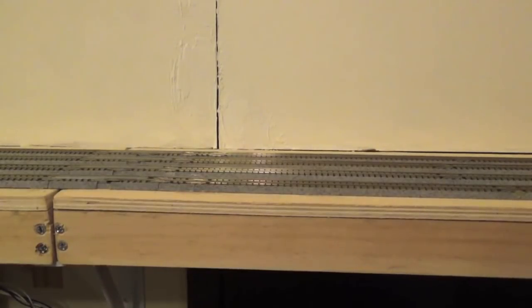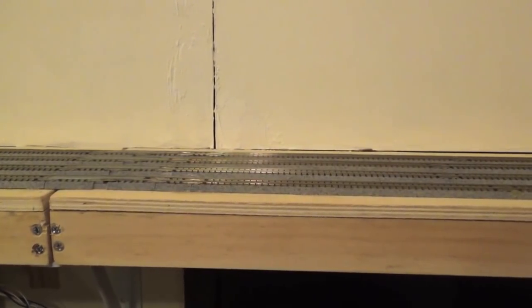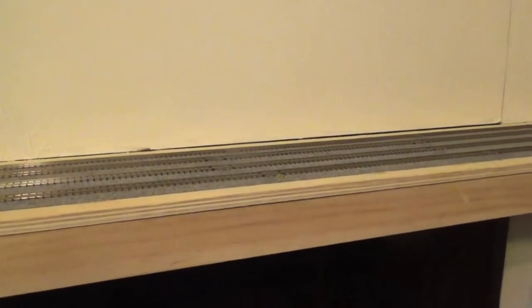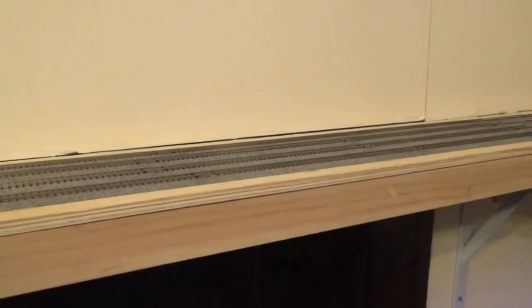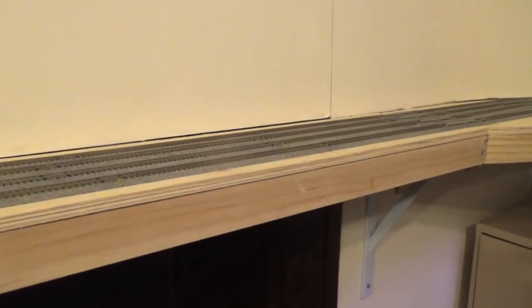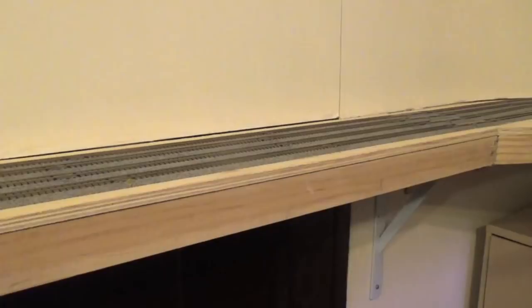The yard crosses in front of a closet door so I had to build a lift-out bridge. The Masonite backdrop is attached directly to the closet door. Later on in this video I will show you how easy and quick it is to remove the lift-out bridge for access to the closet.